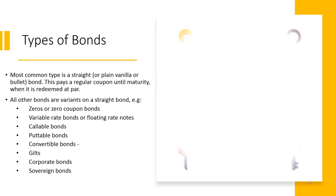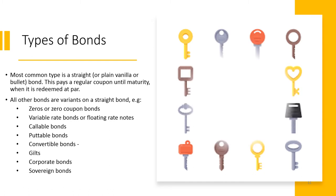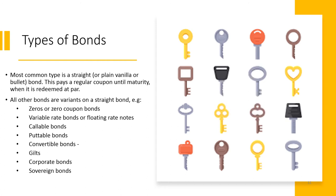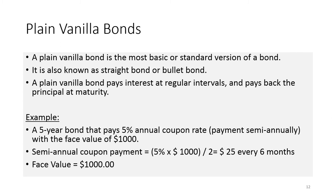In the next few slides, I'm going to introduce the different types of bonds. The most basic type of bond is a plain vanilla bond. There are bonds with embedded options and additional features. A plain vanilla bond is the most basic or standard version of a bond, also known as a straight bond or bullet bond. A plain vanilla bond pays interest at regular intervals and pays back the principal at maturity. It has no additional or special features compared to other bonds with embedded options.